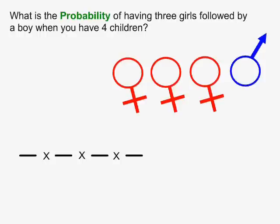The probability of having a girl is 1 out of 2, and the probability of having a boy is also 1 out of 2, so in this case all four of our fractions will be 1 over 2.